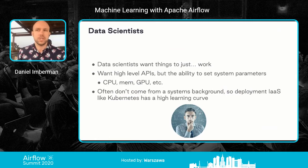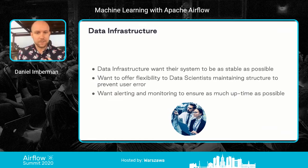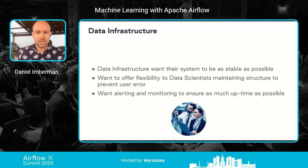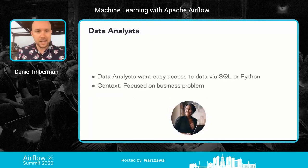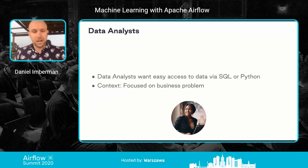They just want to say: I want a machine with a GPU that can run TensorFlow. The data infrastructure teams mostly care about stability — they want to offer flexibility to data scientists but maintain structure to prevent user errors, and they want monitoring to ensure maximum cluster uptime. Data analysts want easy access to data via SQL or Python, focusing on business problems — receiving data in a SQL database and distributing it to the business side in the form of dashboards.